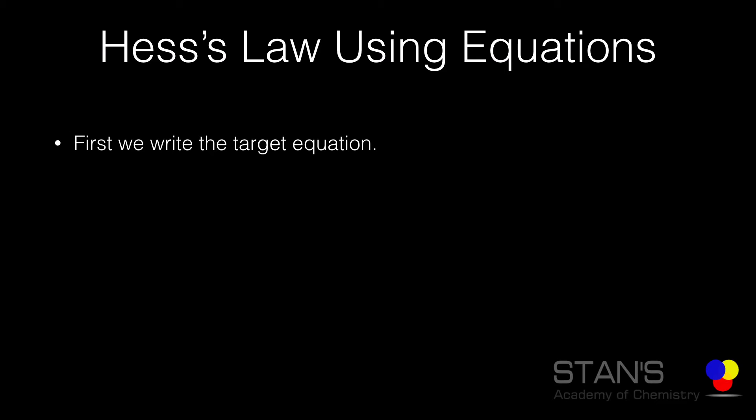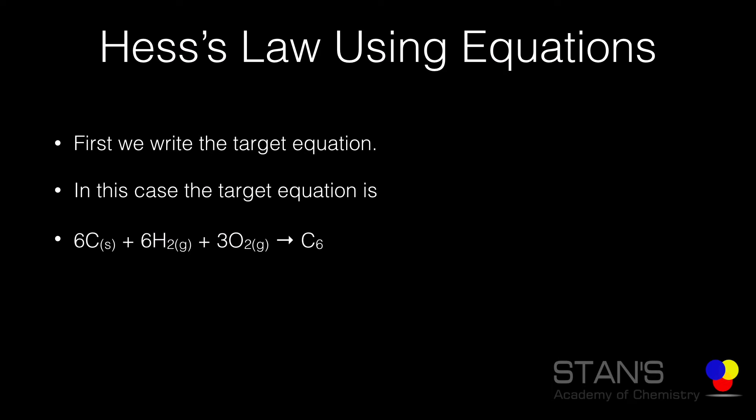When solving a problem using Hess's law, we first write what we call the target equation. In this case the target equation is: 6C + 6H₂ + 3O₂ → C₆H₁₂O₆, and we need to find the standard enthalpy of formation of glucose. By definition, the standard enthalpy of formation is the energy released when one mole of the compound is formed from its respective elements in the standard state.